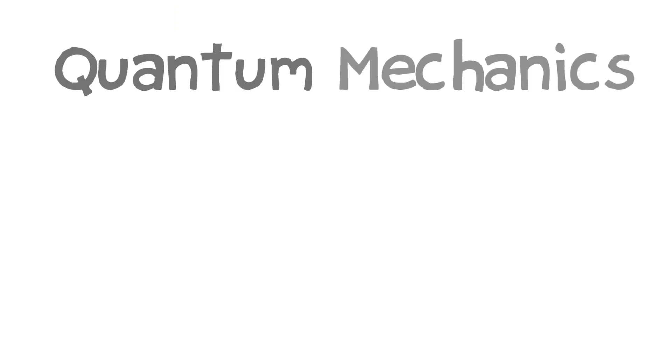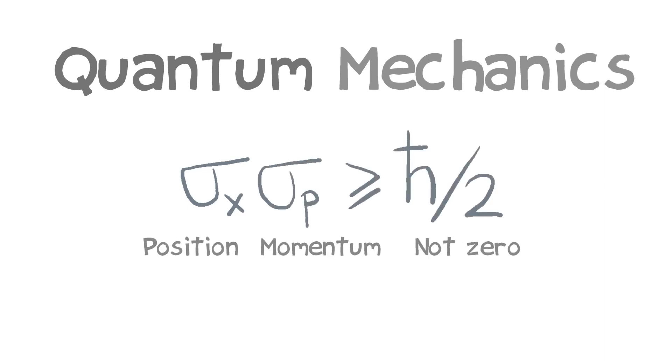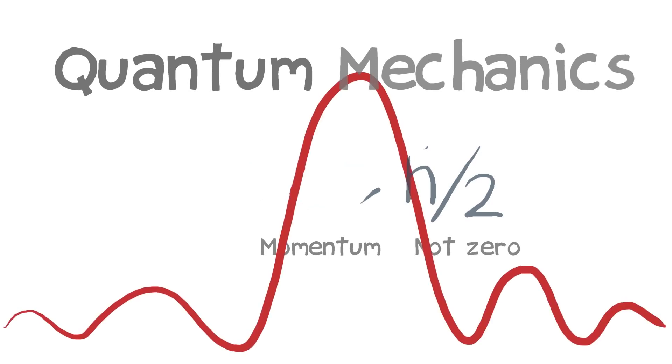What makes quantum mechanics sort of fascinating is this idea that an object can't both have its position well-defined and its momentum well-defined at the same time is fundamentally just a property of waves, just a mathematical property of wave equations. So imagine a water wave.